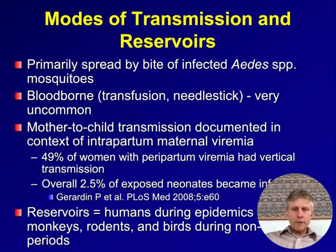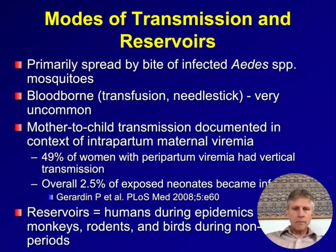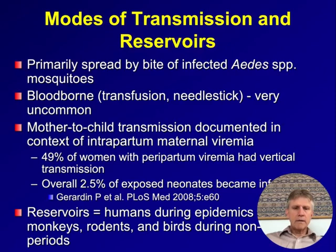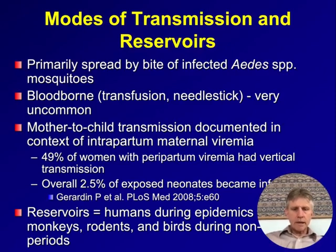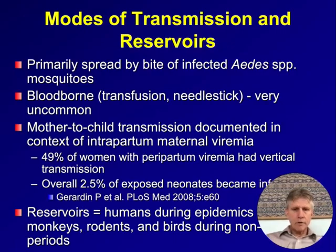Chikungunya is primarily spread by the bite of infected Aedes species mosquitoes — mostly Aedes aegypti, though Aedes albopictus is a competent vector as well. There have been documented blood-borne infections through transfusion of contaminated blood products or needle sticks, though these are relatively uncommon. Mother-to-child transmission has also been documented, occurring more commonly when a mother is infected close to the time of delivery, though not all exposed neonates are symptomatic. In non-epidemic periods, reservoirs include monkeys, rats, and birds.